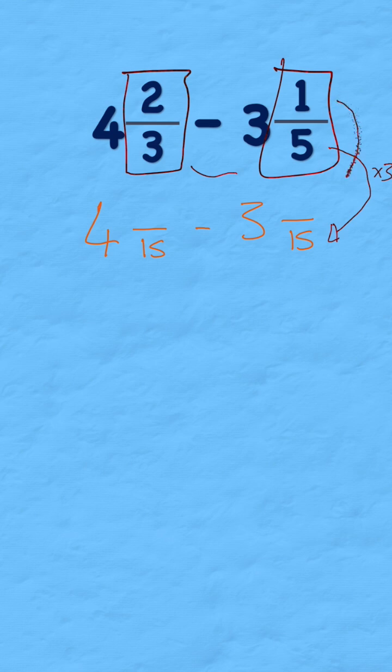So to keep it equivalent, I now need to multiply my numerator by 3 as well. So 1 times 3 is 3. So 3 and three fifteenths is equivalent to 3 and one fifth.